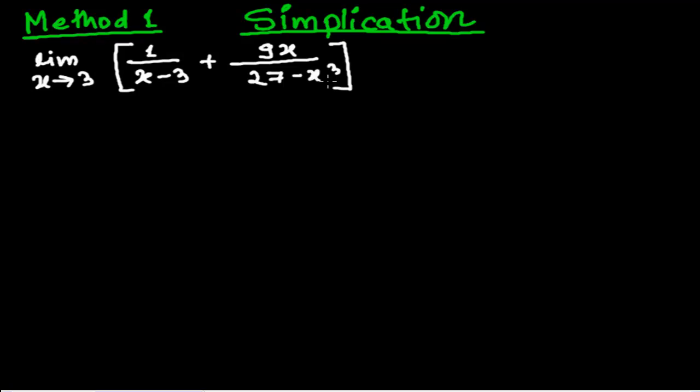And in those 13 methods, this is the first method — the simplification method. So we can evaluate the limit by the simplification method. As the method name says, let's simplify and get the value. Let's evaluate this.